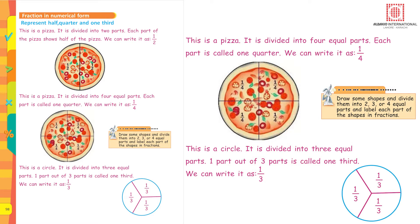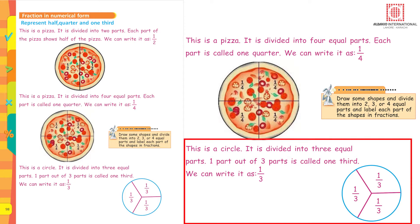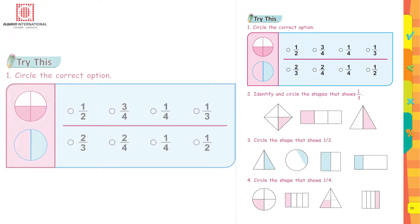In the next picture, this is a pizza divided into four equal parts. Each part is called one quarter; we can write it as one upon four. This is a circle divided into three equal parts; one part out of three parts is called one third.